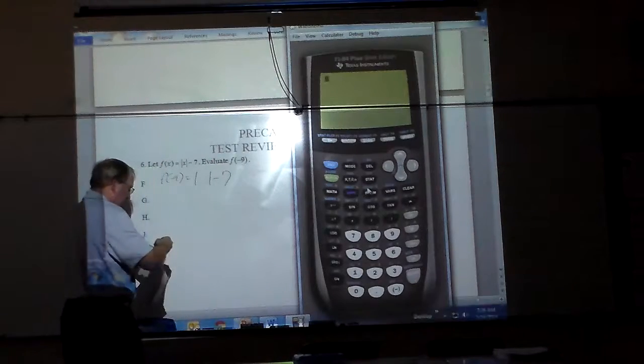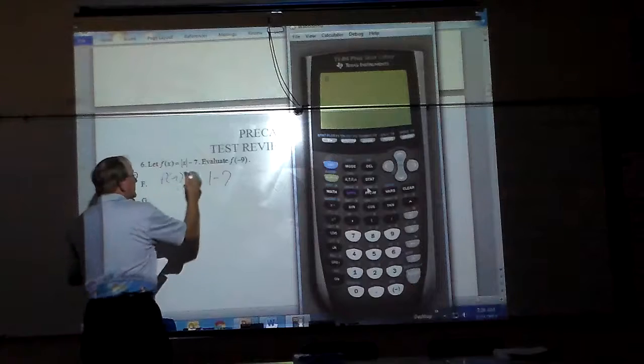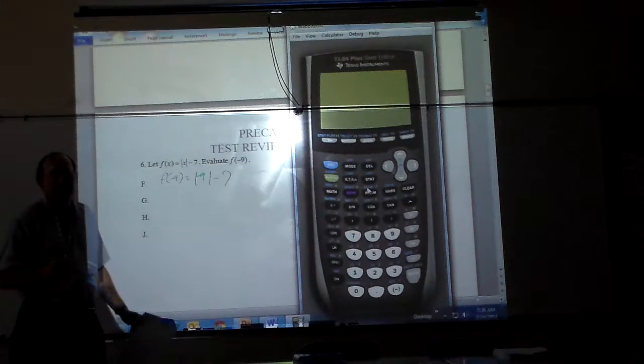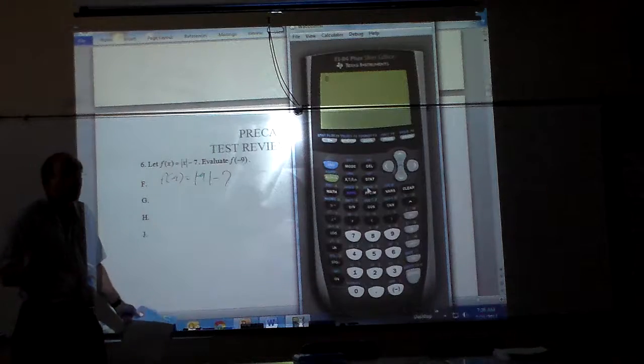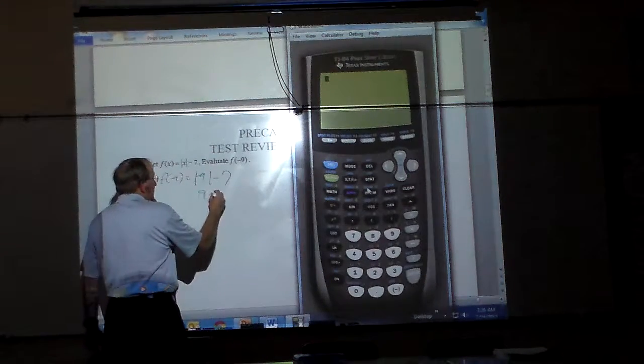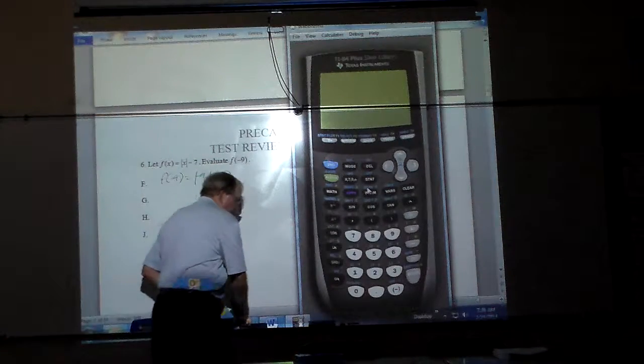I'm going to replace the x simply with a negative 9. Replace that with negative 9. Very simply, the absolute value of negative 9 just means how far is negative 9 from 0. Well, it's 9 places, so it's positive 9. So it's just 9 minus 7, and 9 minus 7 is 2. That's all you had to do on that one.